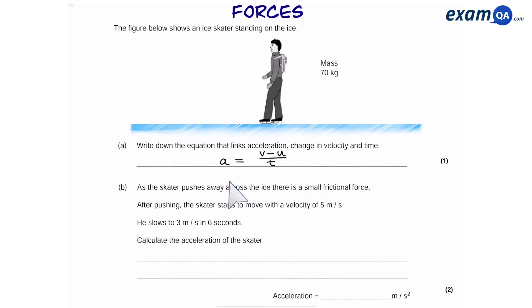Part B. As the skater pushes away across the ice, there is a small frictional force. After pushing, the skater starts to move with a velocity of 5 meters per second. He slows to 3 meters per second in 6 seconds. Calculate acceleration.